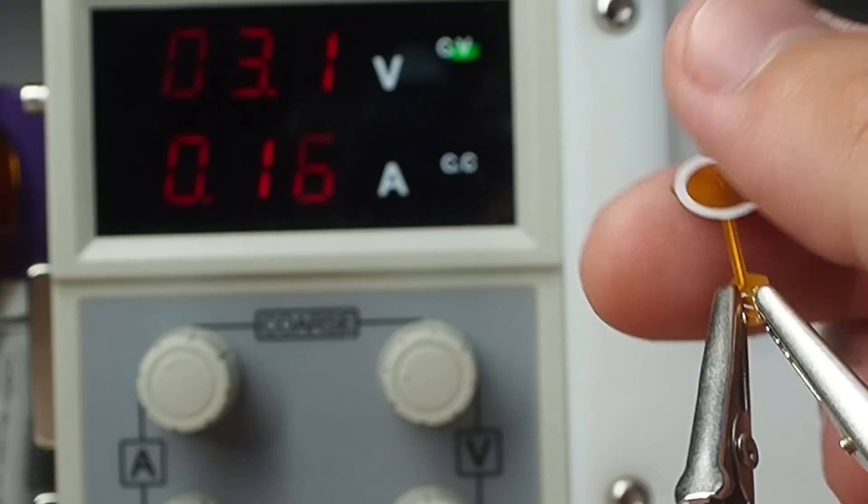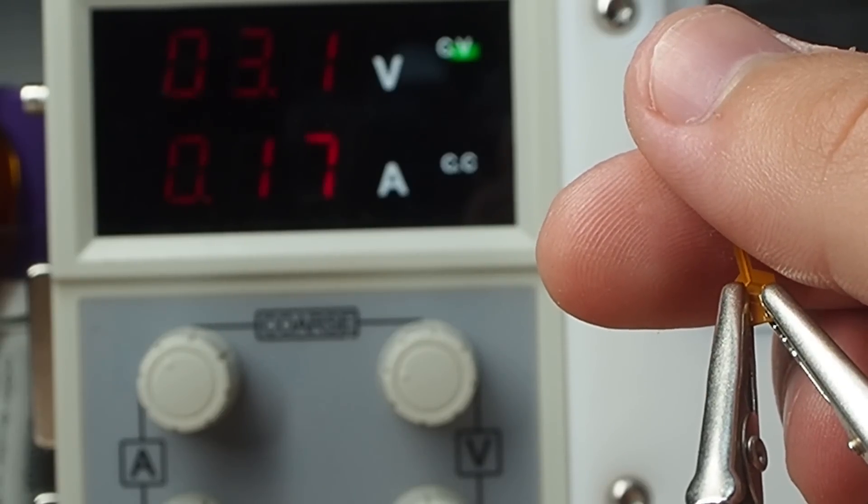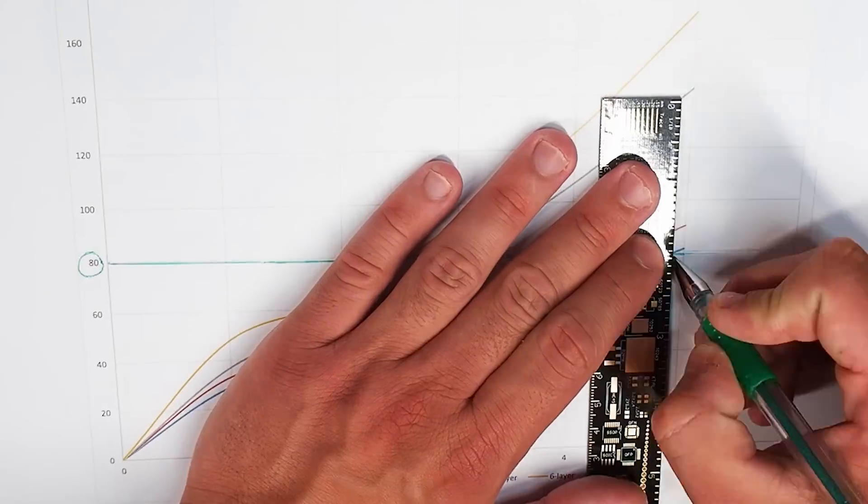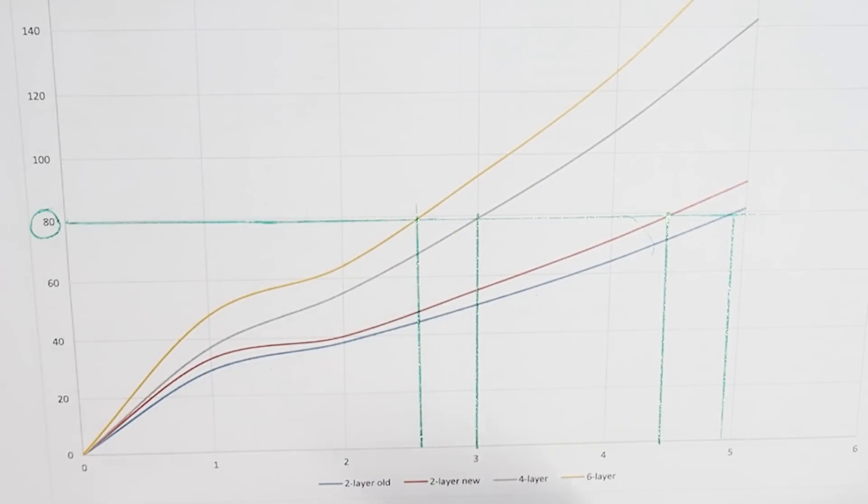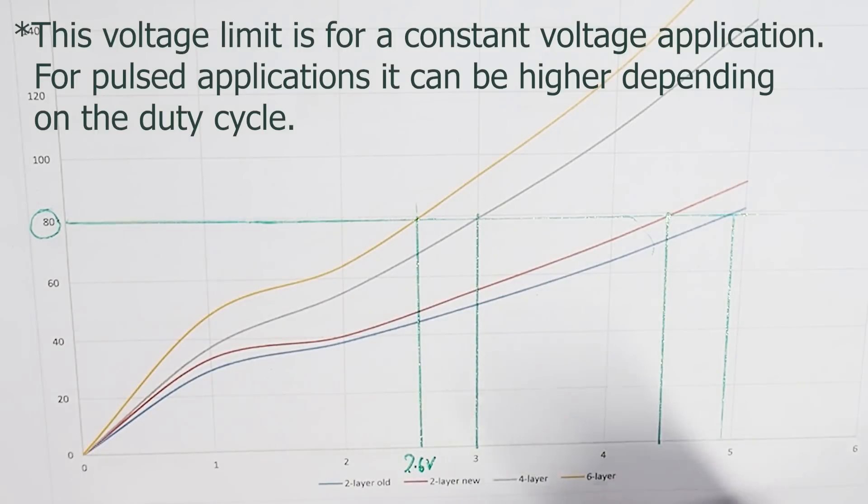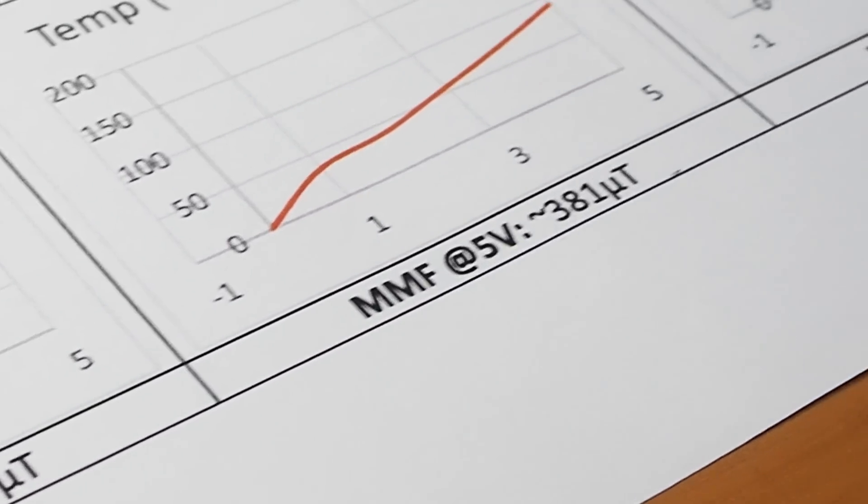If you touch the coil at this temperature you will feel it warm, but not too hot that it will burn your finger. So based on this data we can say that the six layer coil can be driven with a maximum of 2.6 volts, the four layer coil can be driven with a maximum of 3 volts, and both two layer coils can be driven somewhere around 4 to 5 volts.